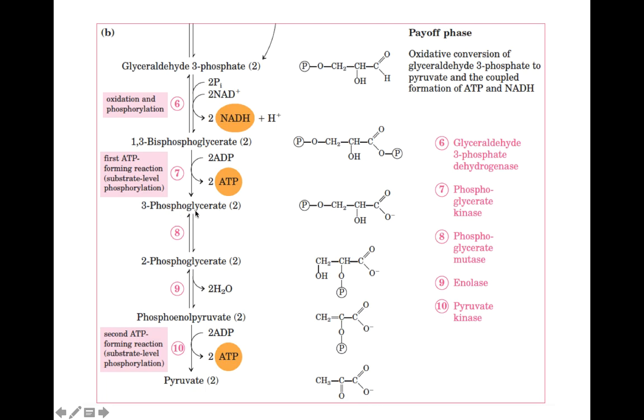1,3-bisphosphoglycerate becomes 3-phosphoglycerate. Then 3-phosphoglycerate - the phosphate group at carbon number 3 is moved, and this reaction is mediated by enzyme number 8, phosphoglycerate mutase. So 3-phosphoglycerate becomes 2-phosphoglycerate.